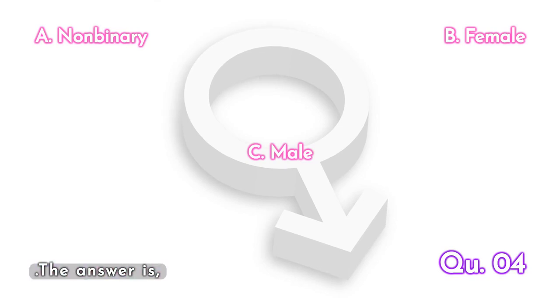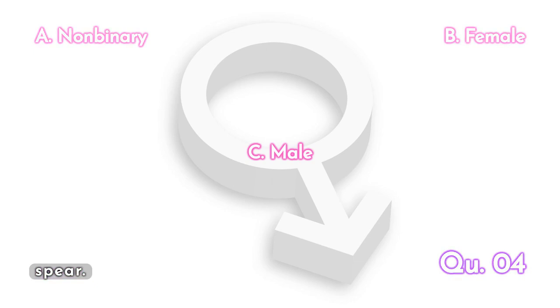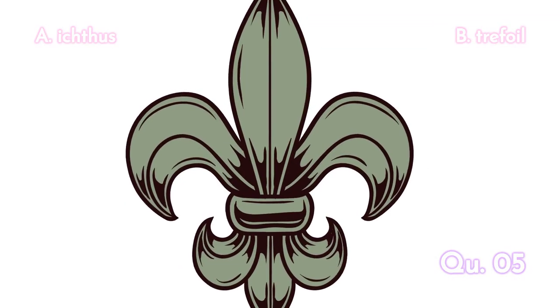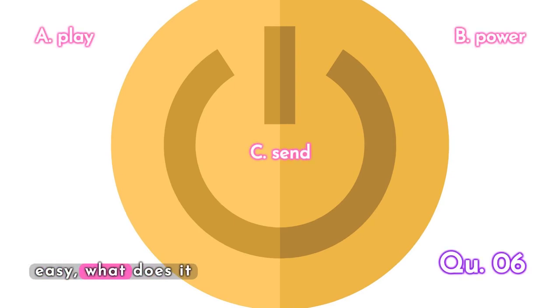The answer is C. Male. The male sex symbol is the same symbol used to represent Mars, the Roman god of war. The circle and arrow represent a shield and spear.